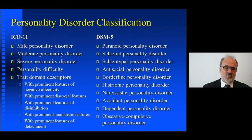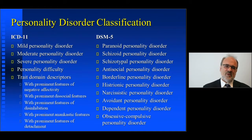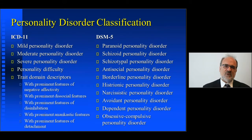The personality disorder classification — one of the really big differences between DSM-5 and ICD-11 is going to be in the way personality disorders are classified. For DSM-5, there was an attempt to move to a dimensional approach, to get rid of the categorical approaches, which is what you can actually see on the slide.